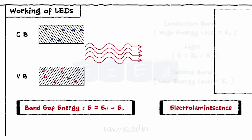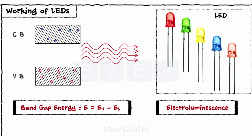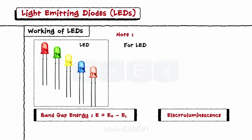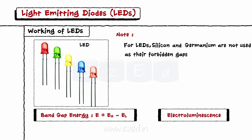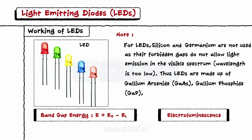Normally, LEDs with red, green, yellow, blue, and orange colors are available. Silicon and germanium are not used for LEDs as their forbidden gaps do not allow light emission in the visible spectrum — the wavelength is too low. Thus LEDs are made up of Gallium Arsenide and Gallium Phosphide, etc.